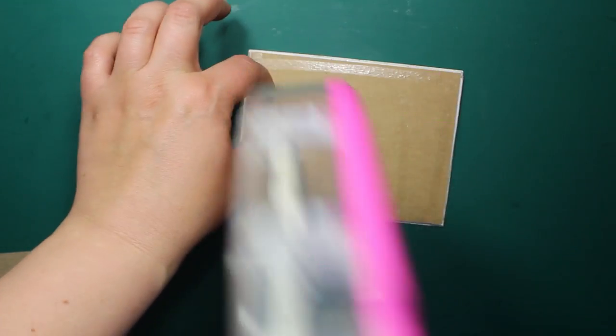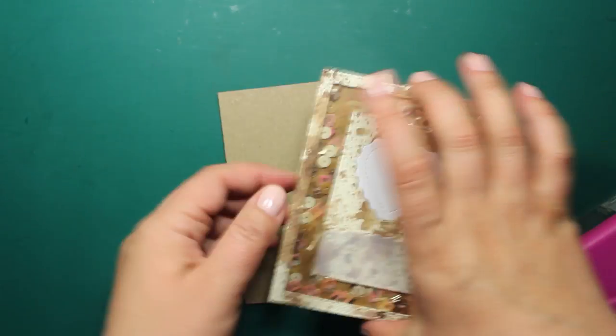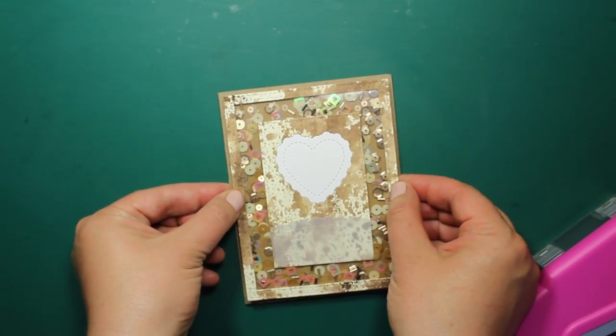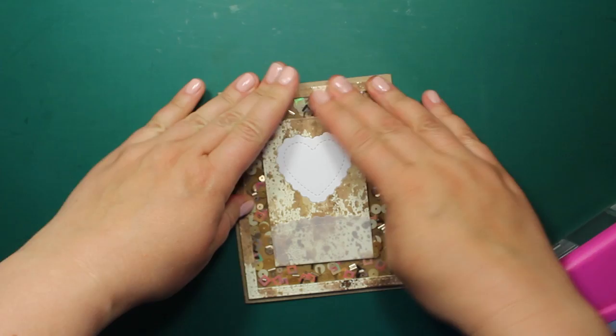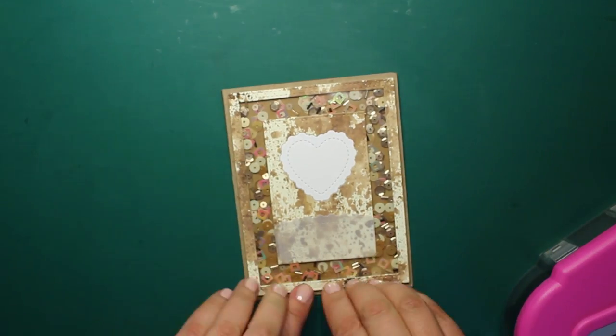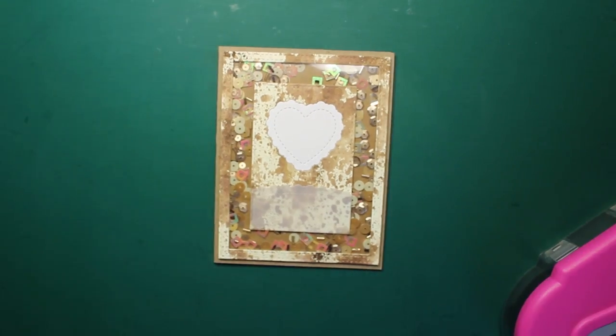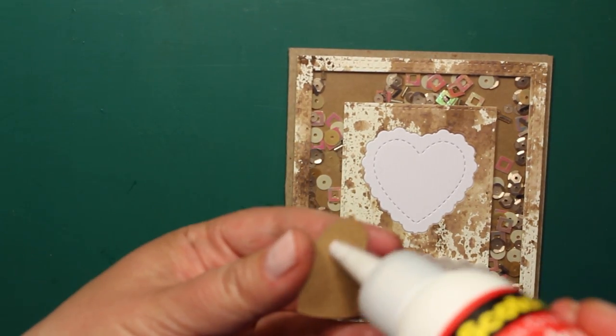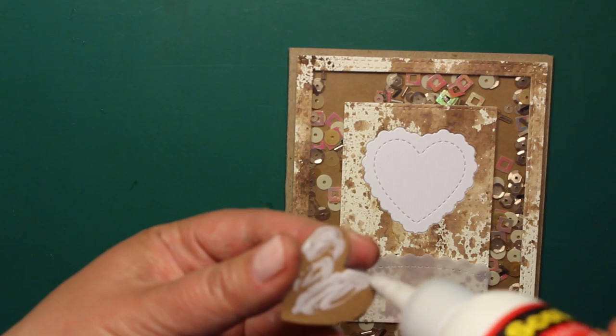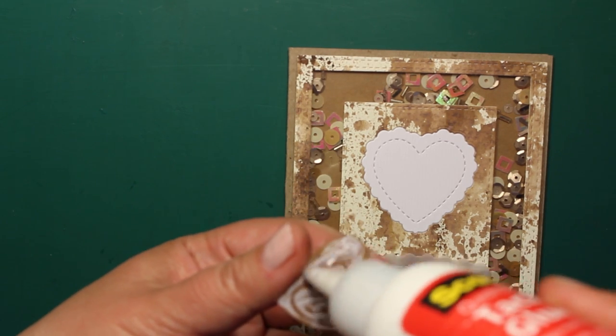Then I'm going to attach the shaker frame onto the A2 size chipboard note card. This is the heart that I have cut out earlier out of craft cardstock and now I'm gluing it onto my card.